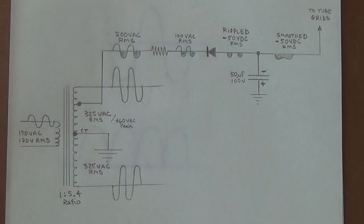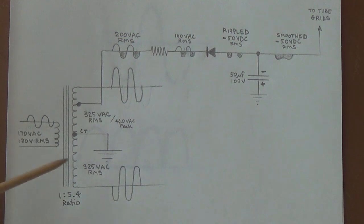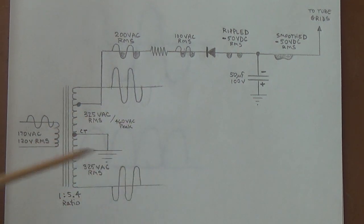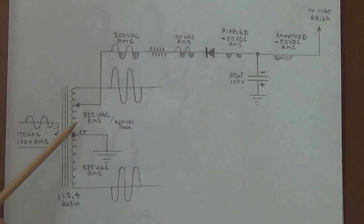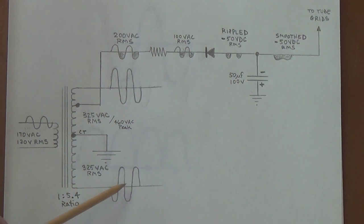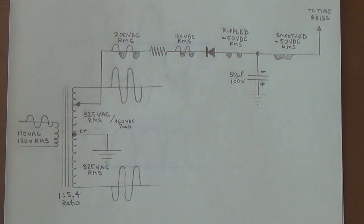And the first type of power supply that we'll discuss will be the half wave rectifier. Okay, here we have a 1 to 5.4 ratio power transformer. When we input 120 volts of RMS on this side, then we get out 650 volts of RMS on the secondary. Because this power transformer has a grounded center tap, from this point, the center tap up to this wire, the output will be 320 volts RMS. And the output from the center tap down here to this wire will be 325 volts RMS. And that's why you'll see transformers like this referred to as a 325-0-325 power transformer.